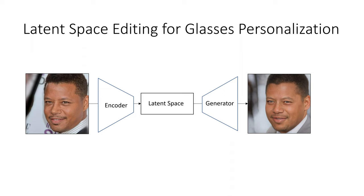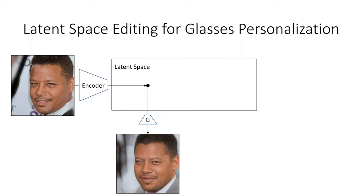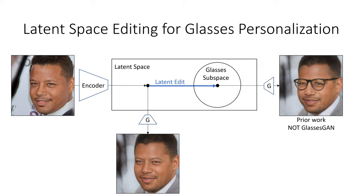Fundamental to the working of GlassesGAN is the technique of latent space editing. Latent space editing works by leveraging the relatively disentangled latent space of a pre-trained generator to make a specific change to an image. This occurs in three steps: encode an image into the latent space, apply a targeted manipulation to the latent embedding, and generate the new image from the modified embedding. Key to this process is the ability to understand the organization of the attribute subspace. Our experiments have suggested that the glasses subspace is a region in latent space near any given identity that contains a nearly limitless set of different eyeglasses images.